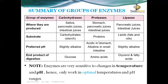Carbohydrases act on carbohydrates — the substrate is starch. Carbohydrate digestion occurs in the mouth, the duodenum, and the small intestine — not in the stomach, because the stomach is acidic and carbohydrases require a slightly alkaline medium. The end product of carbohydrate digestion is glucose.